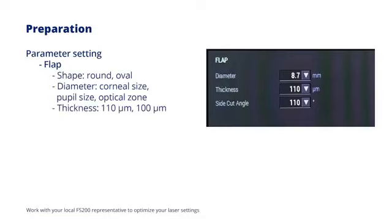Thickness is set at 110 micrometers routinely. It can be reduced to 100 micrometers for high myopia to save corneal tissue.